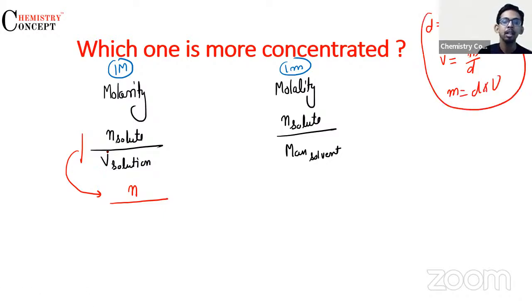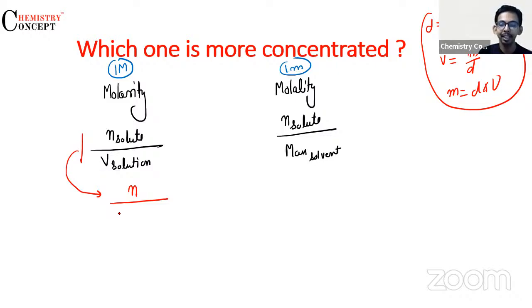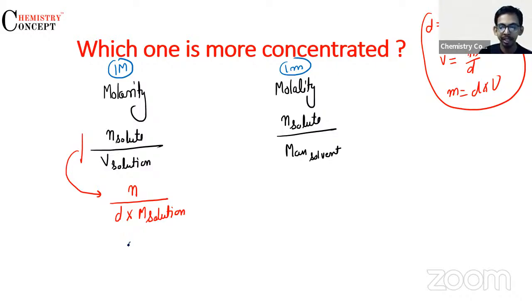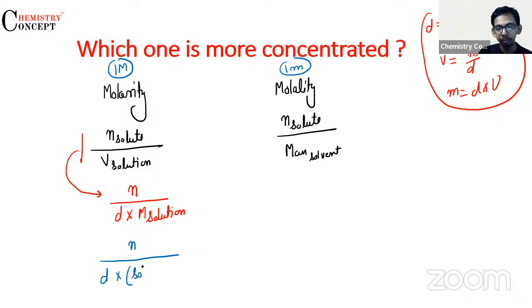Toh molarity is number of moles upon volume of solution. Volume of solution ko hum likh sakte hain as density of solution into mass of solution. Aur mass of solution ko hum further likh sakte hain as number of moles of solute divided by density of solution into (mass of solvent plus mass of solute).